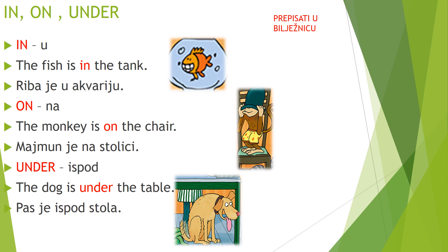In znači u. Na primjer, the fish is in the tank. Riba je u akvariju. On znači na. Na primjer, the monkey is on the chair. Majmun je na stolici. A under znači ispod. Na primjer, the dog is under the table. Pas je ispod stola.